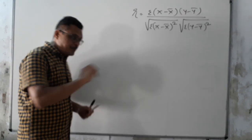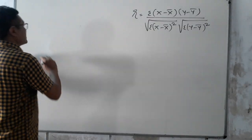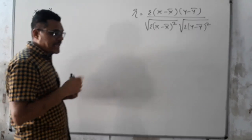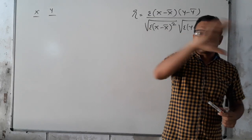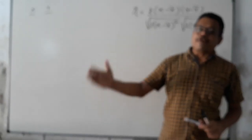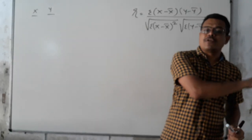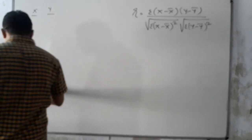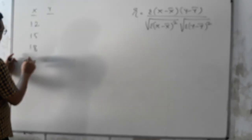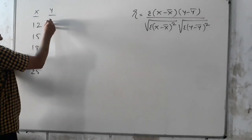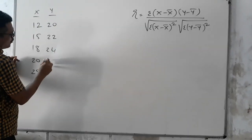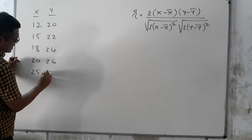Now, let us calculate a question for the correlation. Suppose in the question, two columns are given: X and Y. The X values are 12, 15, 18, 20, and 25. And in column Y, the values are 20, 22, 24, 26, and 18.